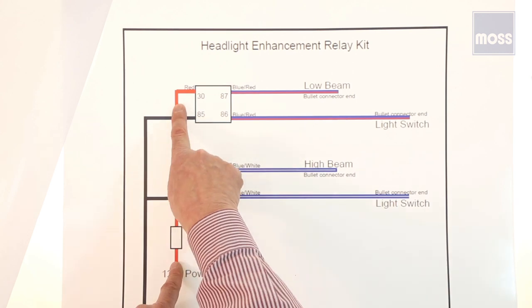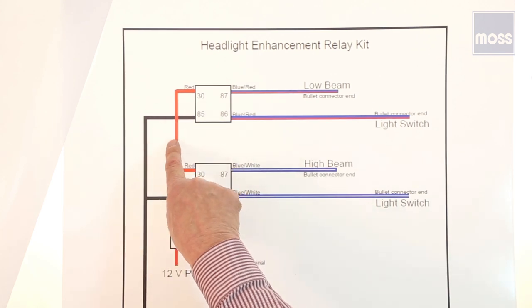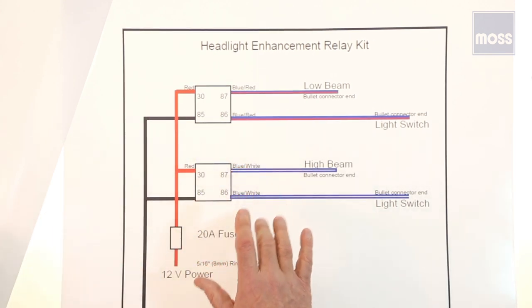Number one, you have a red wire coming up here that's coming from power. Number two, we have a black wire, and that's ground. Red is power, black is ground. Let's hold that for a minute.